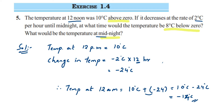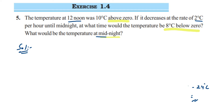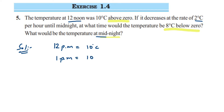Now for the second question: at what time will the temperature be minus 8 degrees Celsius? There are two ways to find this. I'll use the hour-by-hour method, which is easier to follow. At 12 p.m. the temperature was 10 degrees Celsius. At 1 p.m. there's a decrease of 2 degrees Celsius, so 10 minus 2 equals 8 degrees Celsius. At 2 p.m. it's 8 minus 2 which equals 6 degrees Celsius.